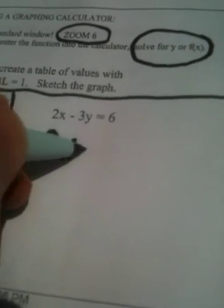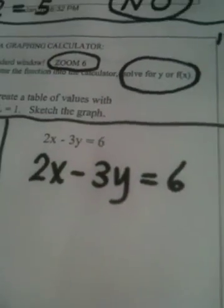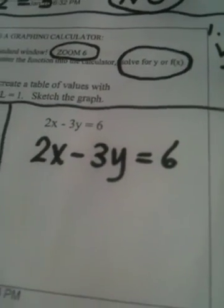We are supposed to graph the line 2x minus 3y equals 6. Now you should be learning by now two things to do when you graph.